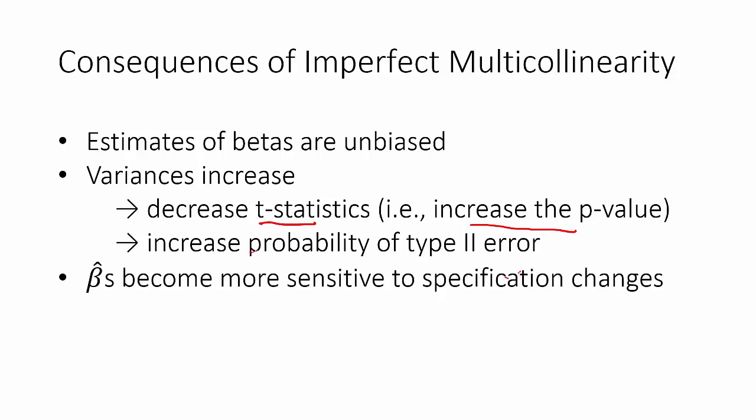A third consequence is that the beta hats, our estimates of the true beta, become more sensitive to the specification changes we might make to the model. In other words, if we make small changes like adding a variable or taking away a variable, those beta hats are likely to move more than they should.